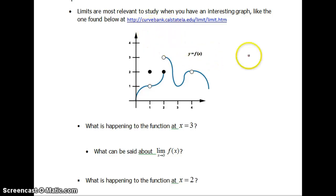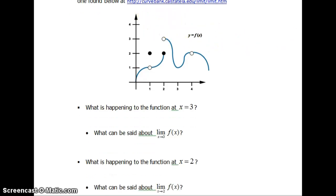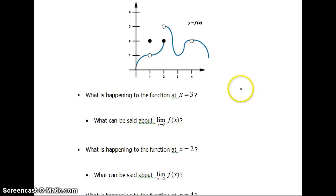Okay, so I found this really cool graph. It's got some interesting features to it and some more stuff that we can talk about. So first let's start and take a look at what's happening to the function around 3. So x equals 3 is here. What's happening to our function at and around 3?